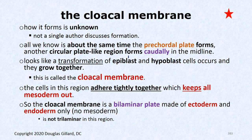Where the cloacal membrane forms, there is ectoderm and endoderm on top and bottom, but no mesoderm — so it's only a bilayer structure. The trilaminar disc is only bilaminar at the cloacal membrane. The same goes for the oropharyngeal membrane: no mesoderm in that region. So the cloacal membrane is a bilaminar plate made of ectoderm and endoderm.